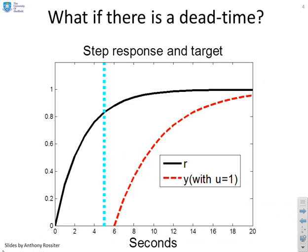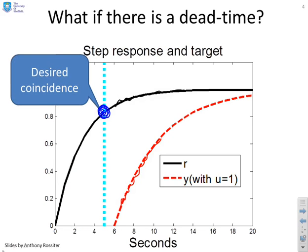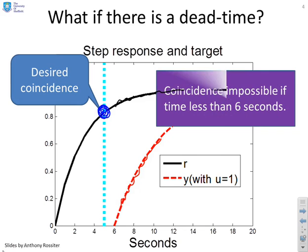Now what do you do if there's a dead time? You can see I've got a problem here because I've got a target here in black, and I've got a system step response which is here given in red, and I've said I want these two to coincide at this point here. And you can see immediately this is just not possible. It's impossible to get coincidence if the coincidence time is less than six seconds because this system has got a dead time of six seconds. So what do I do now? PFC seems to have a problem.